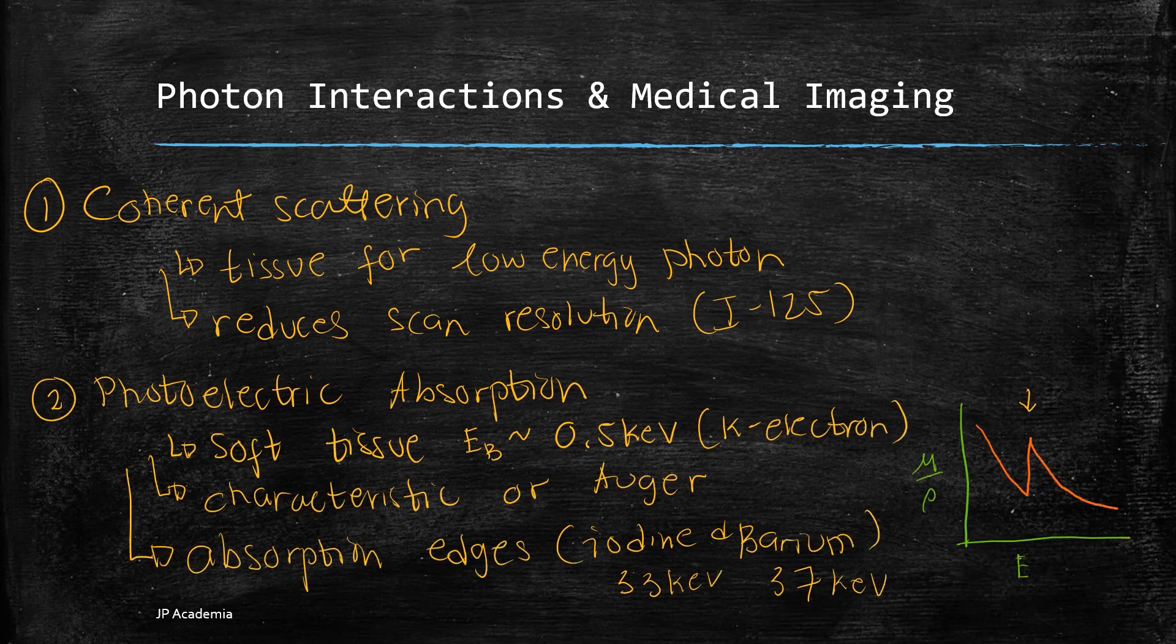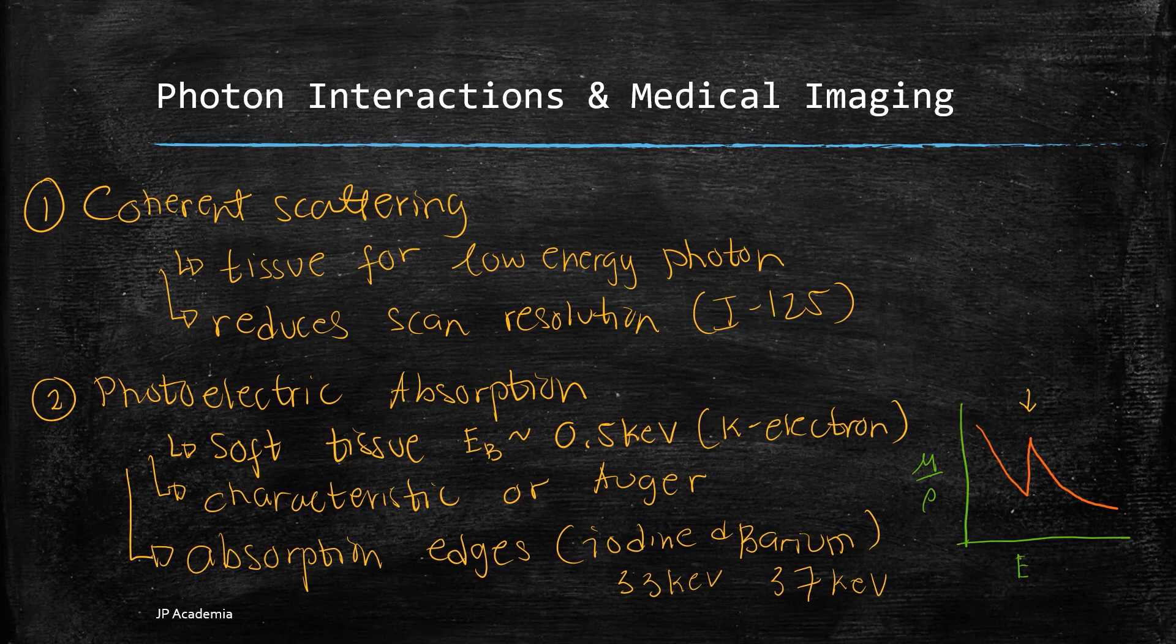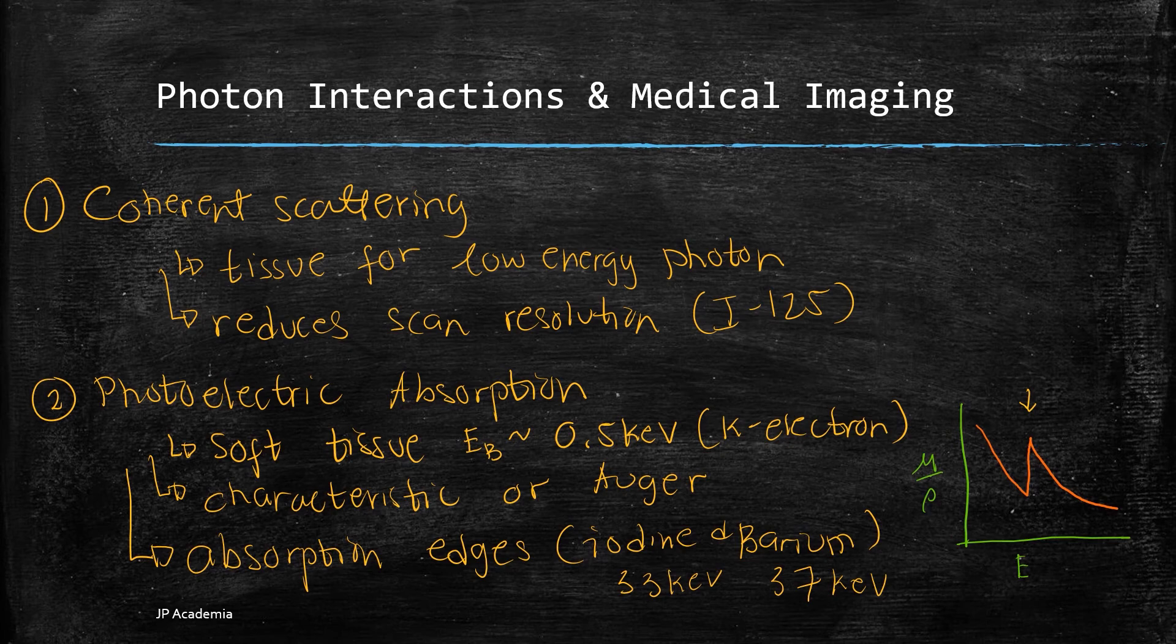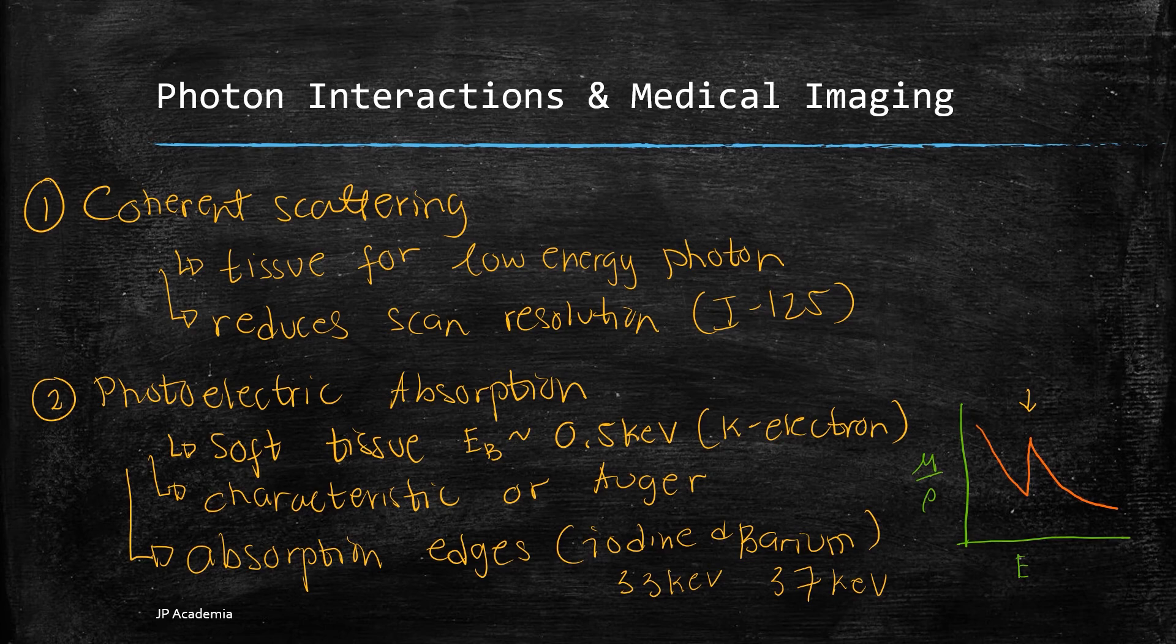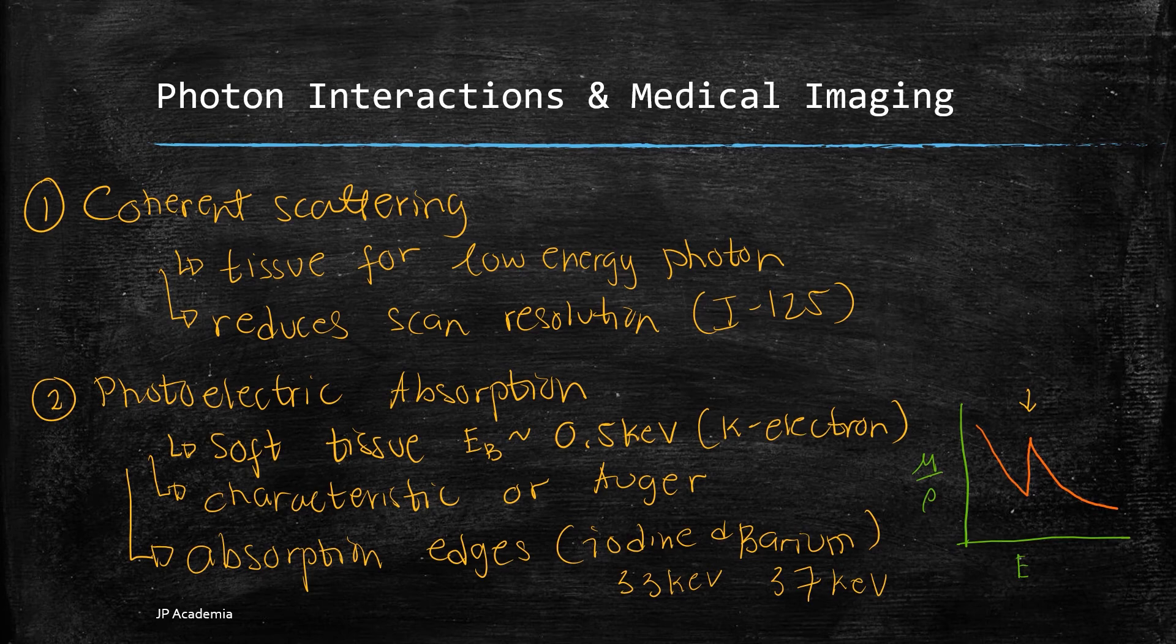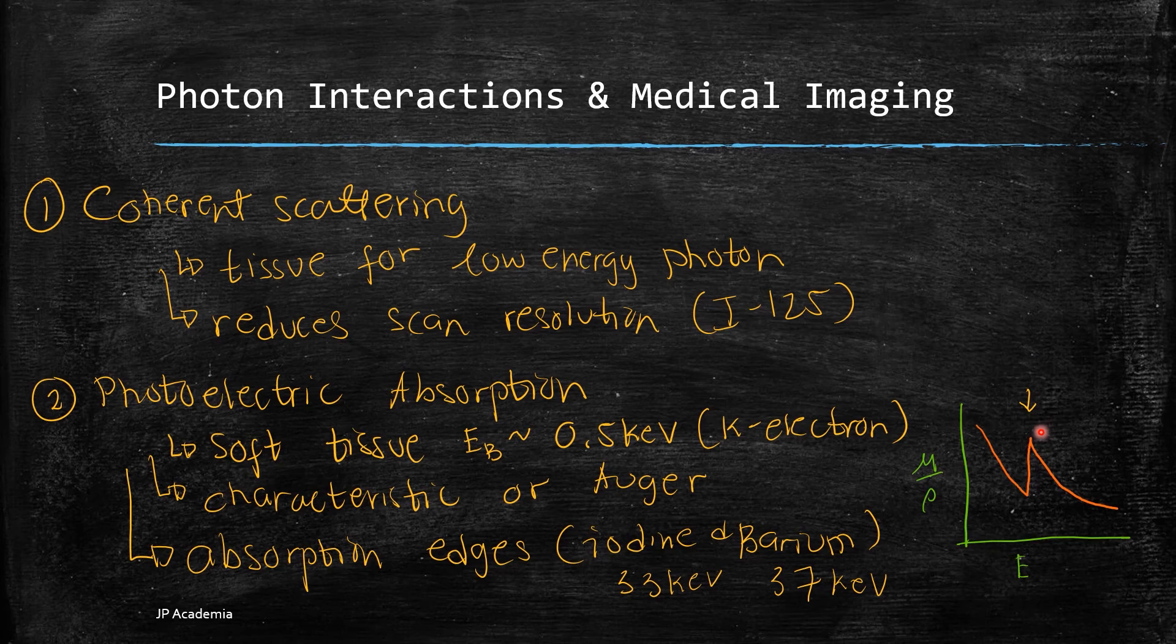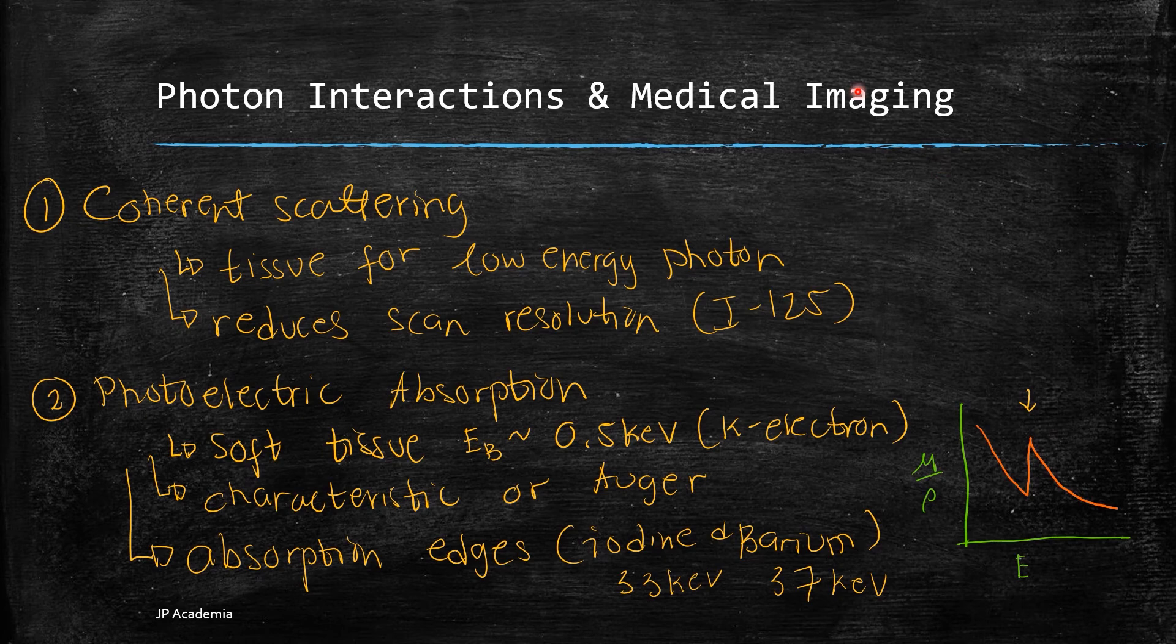Second, we have the photoelectric absorption. And this is when x-ray or gamma ray transferred its total energy to an inner shell electron, thus ejecting it. The average binding energy of soft tissue is about 0.5 kilo electron volt for K-shell electron. Due to the vacancy, it may lead to characteristic photon emission or Auger electron emission that are rapidly absorbed by the surrounding tissues. The photoelectric mass attenuation coefficient, as shown here at the lower right, this refers to the absorption edges which is observed. And this is important in choosing the photon energy for imaging with contrasts made of compounds made out of iodine and barium with these K-absorption edges.